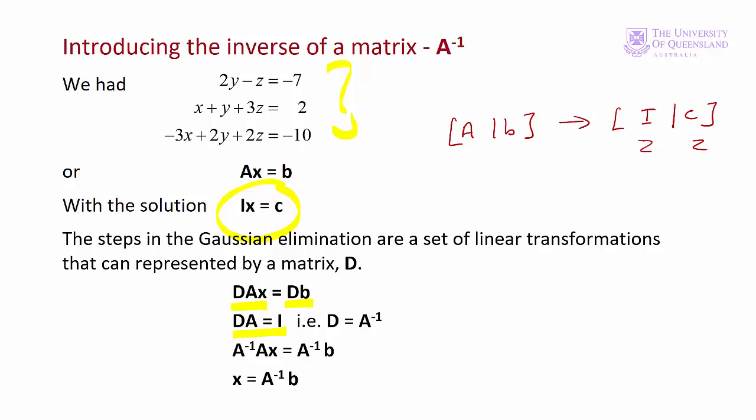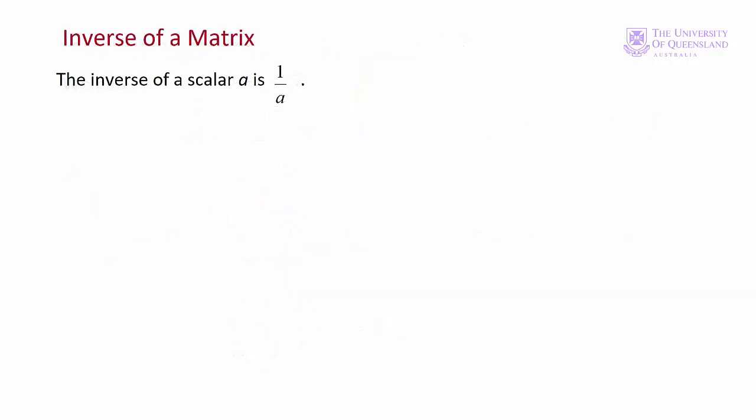That matrix D is in fact the inverse of A, designated A to the minus 1. If we have the inverse of the matrix of coefficients, we can pre-multiply the right-hand side constants by that inverse and so find the solution. Before we see how to calculate the inverse, let's look at some of its properties.